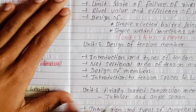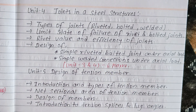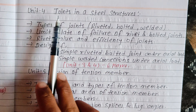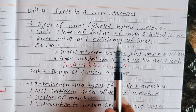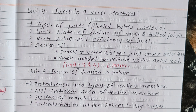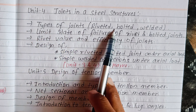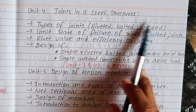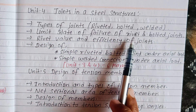Units 3 and 4 each carry six marks in the exam. Unit 4 covers joints in steel structures, which is a very important topic. It includes the limit state of failure of riveted and bolted joints.